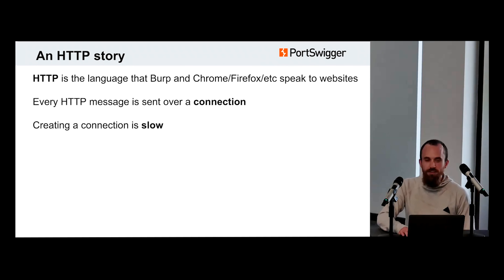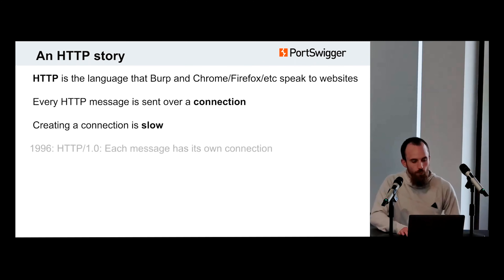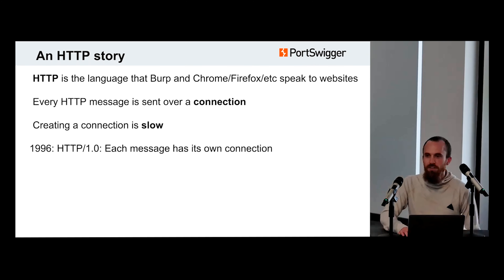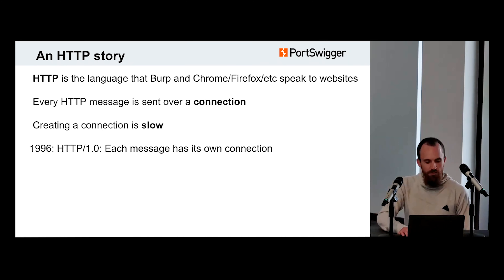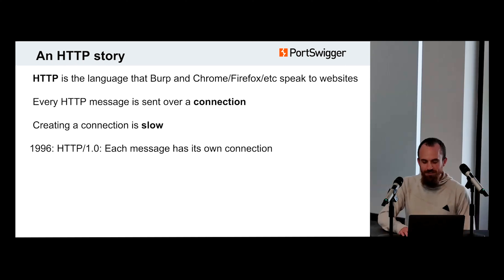So the original standardized version of HTTP was called 1.0. It came out in 1996, and each message was sent over its own unique connection. And everything was nice and secure and wonderful.